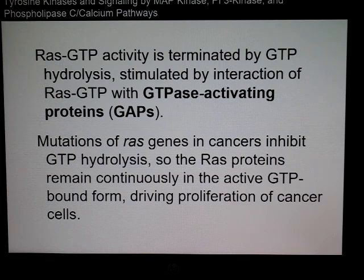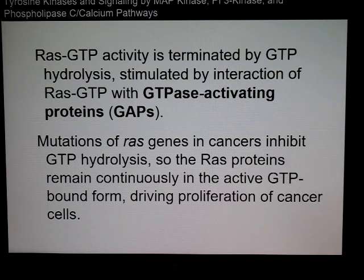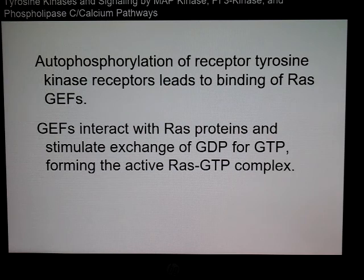GTP hydrolysis is stimulated by GAPs. If RAS genes are mutated in cancers, it inhibits that hydrolysis, meaning RAS is continuously activated and will drive proliferation of cancer cells. Autophosphorylation of the receptor tyrosine kinase leads to the binding of RAS and its exchange factors as well.